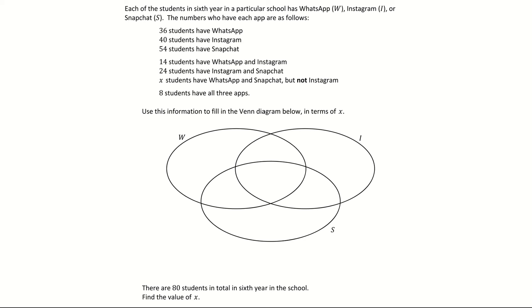It's always good practice when you're doing these questions to start by filling in the intersection first. So that's the middle region. Then fill in the missing letter, the x in this case. We need to start from the bottom here. It says that eight students have all three apps. So that's the intersection of all three. The key word there is 'all', so that's the intersection of the three sets. I'm filling in my eight in the middle. That's the first one done.